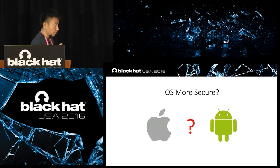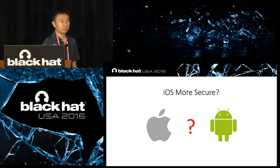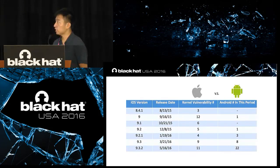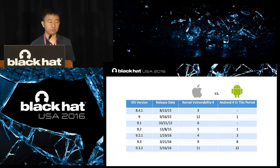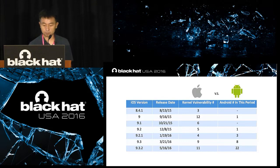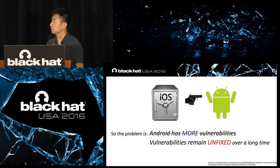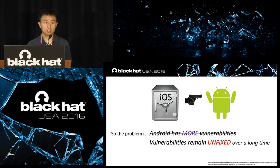Let's ask a common question: why is iOS more secure than Android? Is it because iOS has fewer kernel vulnerabilities? Actually, in most of the time, iOS has more kernel vulnerabilities than Android. The problem is not that Android has more vulnerabilities than iOS, but that Android vulnerabilities remain unfixed over a much, much longer time than iOS.